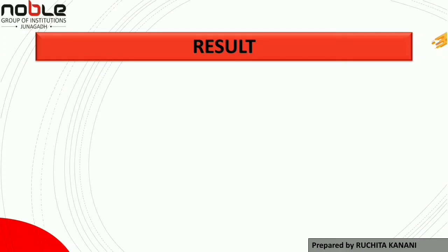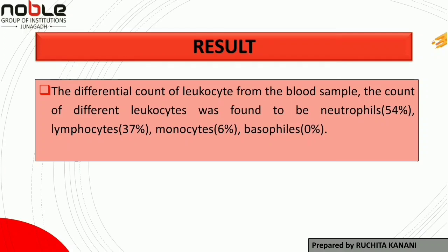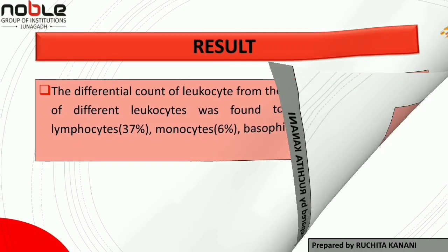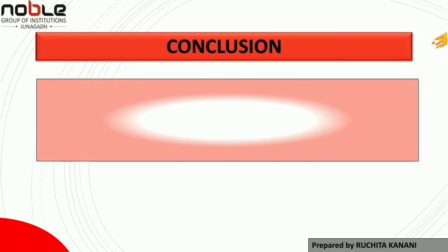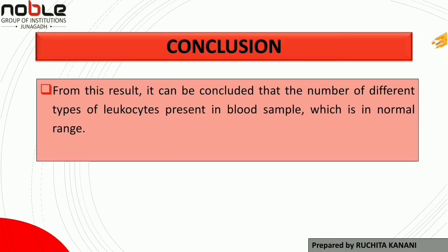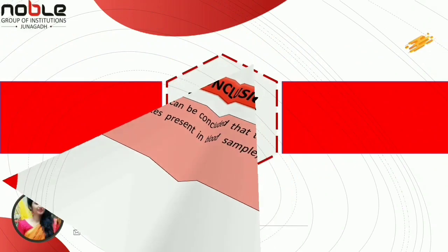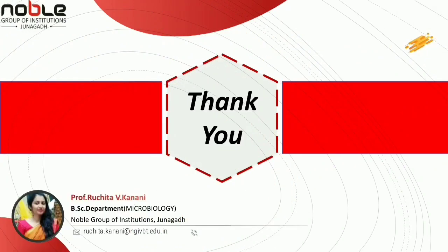The result is that the differential count of leukocytes from the blood sample was found to be: neutrophils 54%, lymphocytes 37%, monocytes 6%, eosinophils 3%, and basophils 0%. The conclusion is that the number of different types of leukocytes present in the blood sample is within the normal range. That's all about DLC — thank you everyone. If you have any questions regarding this practical, please write them in the comment box.